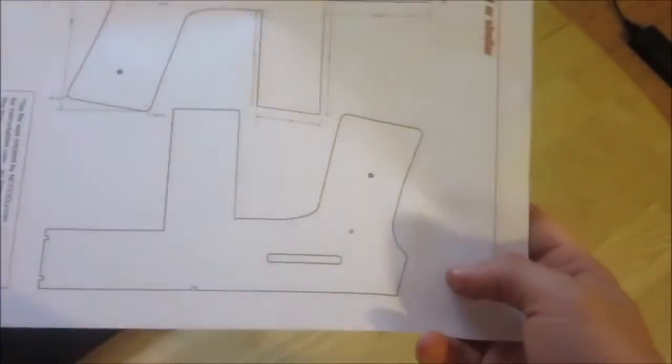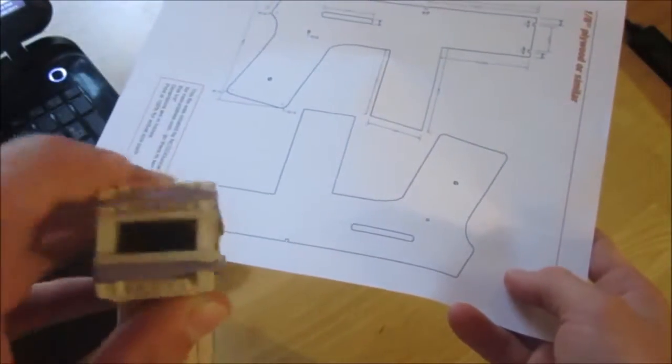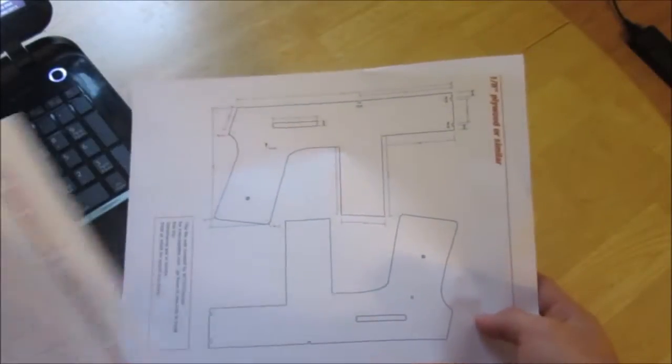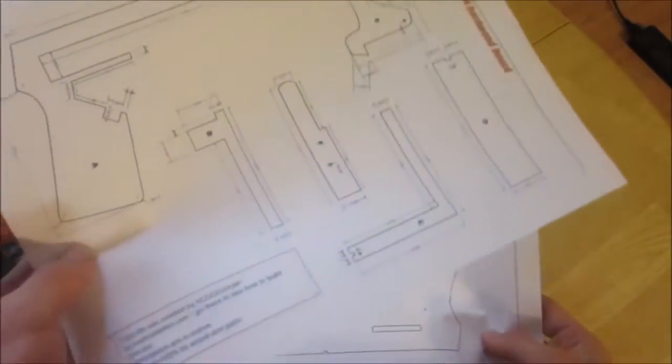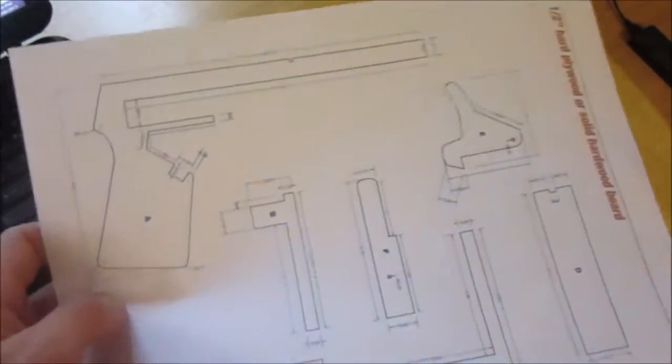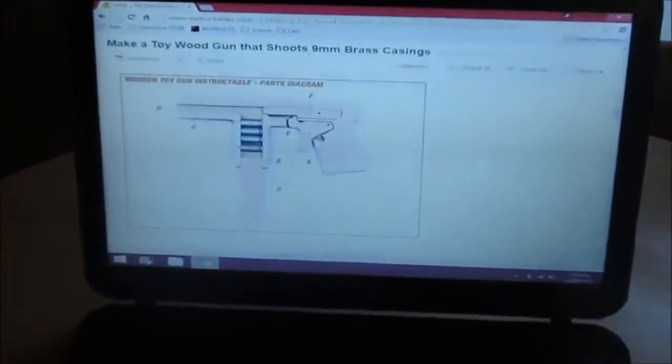So this stuff here is the template, full scale, for the eighth of an inch wood. And then, as outlined on the Instructables page, you then cut all of this using a jigsaw out of the thicker stuff, then assemble it on the inside, as you see there.